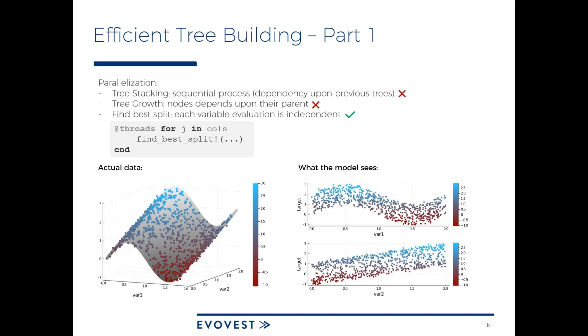Effectively, the model acts in a one-way fashion. While the actual data can be two-dimensional, the algorithm looks in sequence throughout each of the individual variables and it is very difficult to figure out what is the best split point on that given variable. So using the convenient threads macro makes that parallelization quite easy.